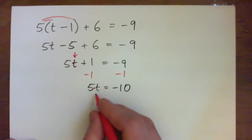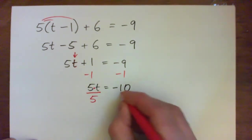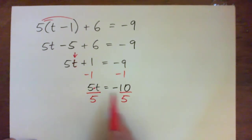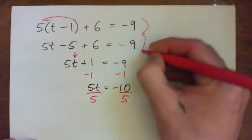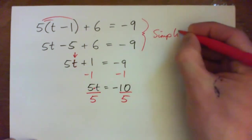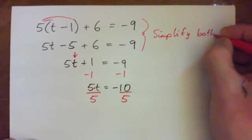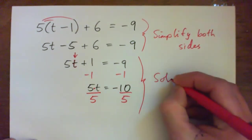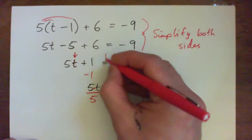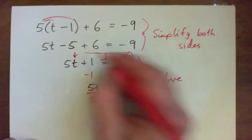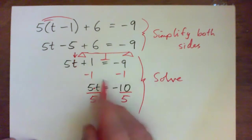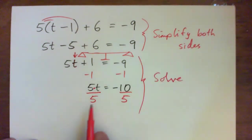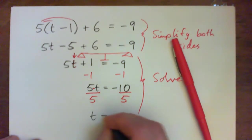To undo multiplying by 5 we need to divide by 5. Now if you divide the left by 5 you must divide the right by 5. So I just want you to notice that first we simplify both sides and then we solve. And in the solving that's when we think about our equation like a weighing scales. Whatever we do to one side you must do to the other. So we subtracted 1 from both sides, and then we divided both sides by 5. And we get t equals negative 2.